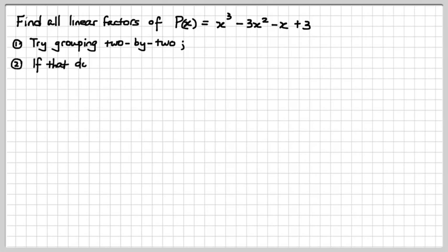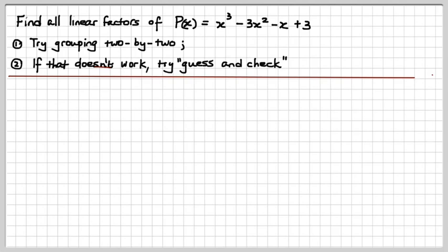Now, if that doesn't work, we try guess and check. That's just to get a start where you find one linear factor, which then enables you to proceed with other techniques to find the others. One of those includes long division, and there are two others, and I will show you what they are.